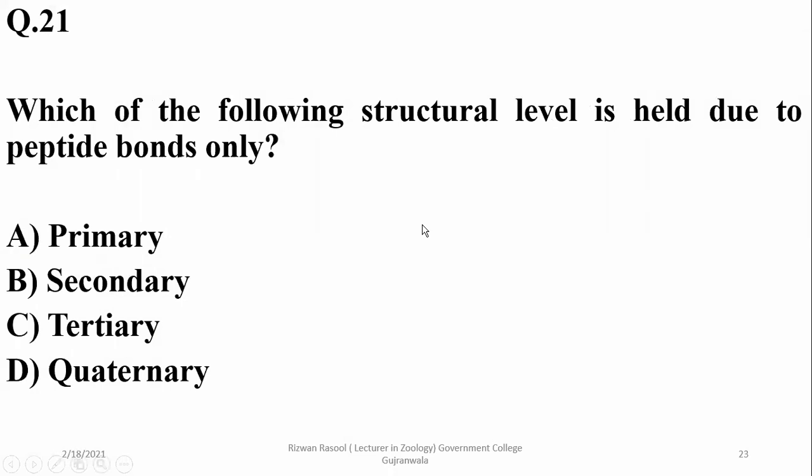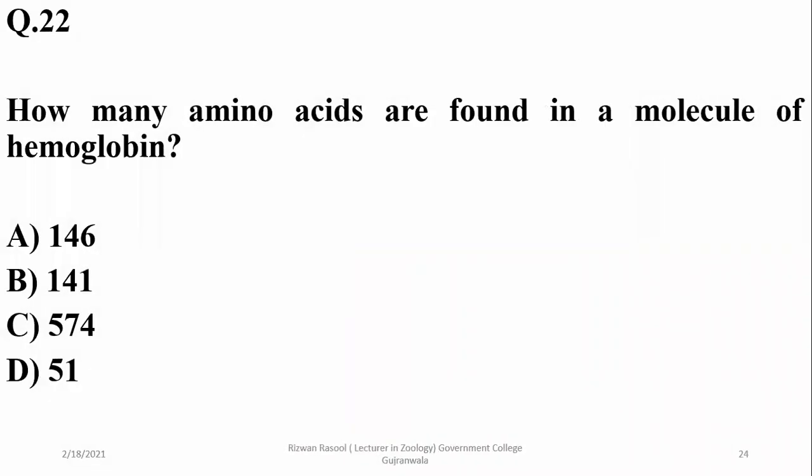Which of the following structure level is held due to peptide bonds only? It is primary structure level, because secondary level has peptide bonds plus hydrogen bonds, and tertiary and quaternary levels have R-chain interactions also involved.